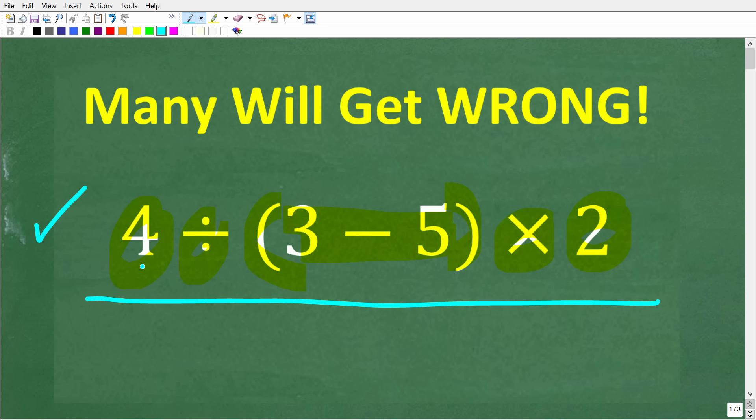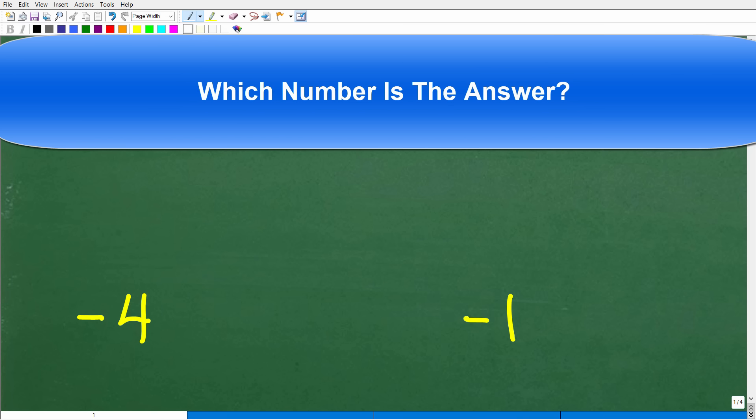All right, so once again we have 4 divided by 3 minus 5 in parentheses times 2. Okay, so let's go and take a look at the right answer.